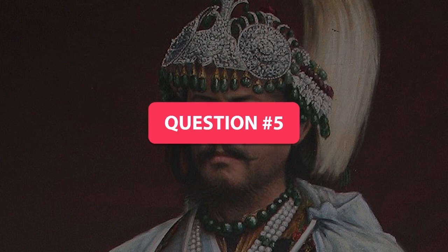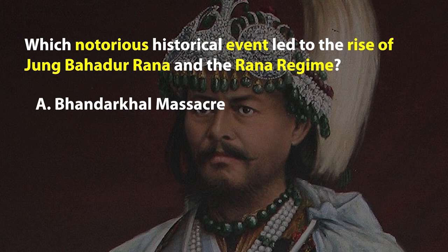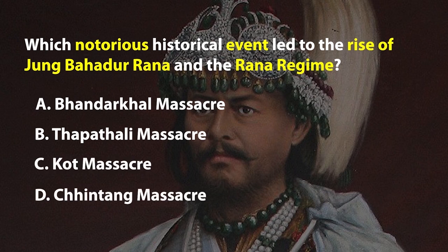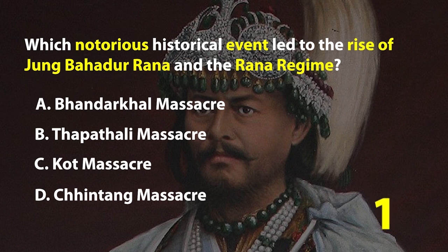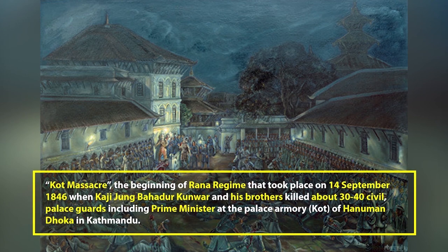Question number 5. Which notorious historical event led to the rise of Jangga Bahadur Rana and the Rana regime? A. Pandarkal Massacre, B. Tapatali Massacre, C. Kot Massacre, or D. Chintang Massacre. The right answer is C. The Kot Massacre marks the beginning of the Rana regime, taking place on 14th September 1846, when Kaji Jangga Bahadur and his brothers killed about 30 to 40 civil and military officers and palace guards, including the then Prime Minister and senior ministers and army generals at the palace armory court of Hanmanduka in Kathmandu.